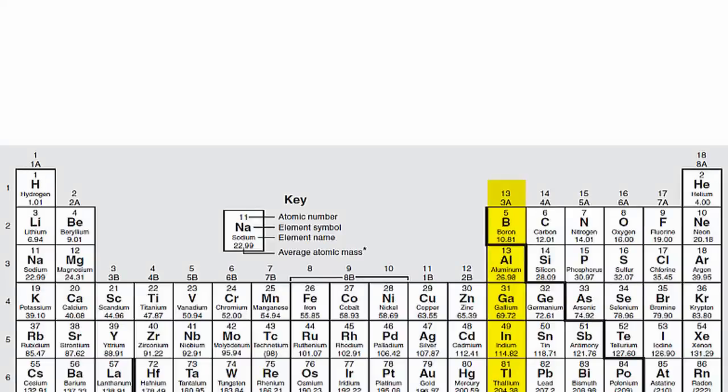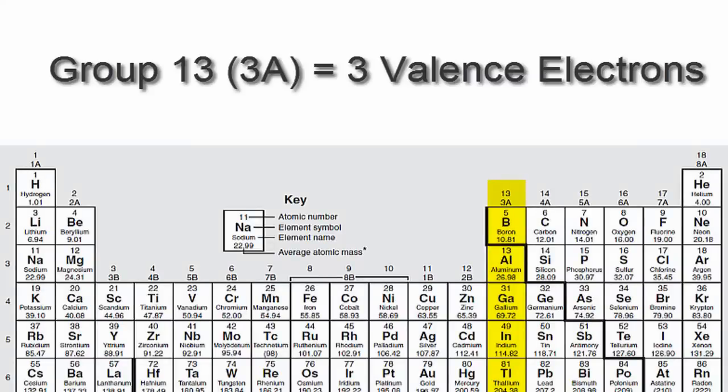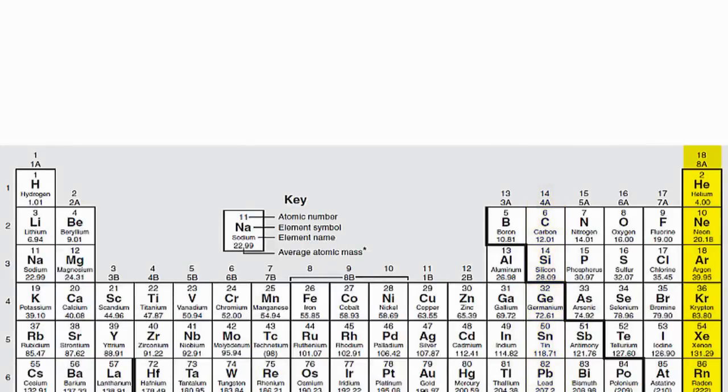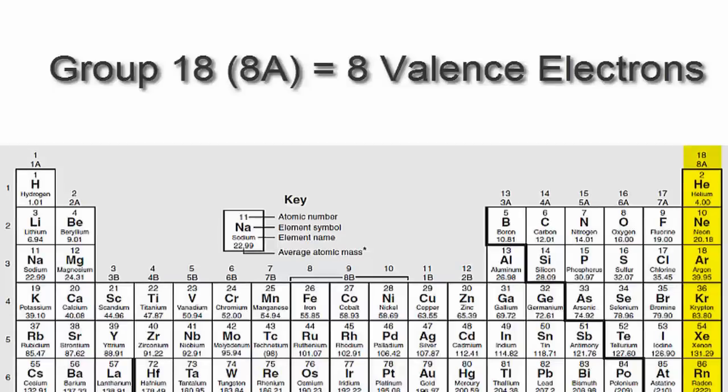We'll go to 13 or 3A, which have three valence electrons, then 14 or 4A, each of those elements in group 14 or 4A have four valence electrons, all the way up to group 18 or 8A, which have eight valence electrons.